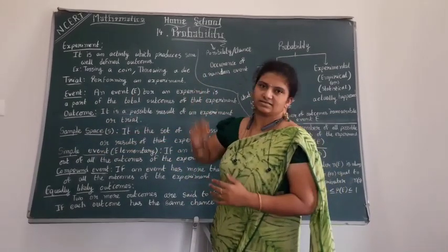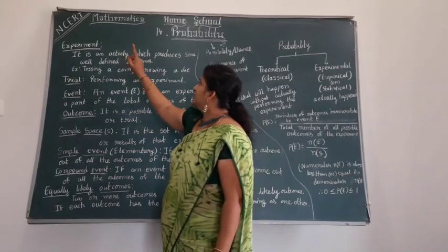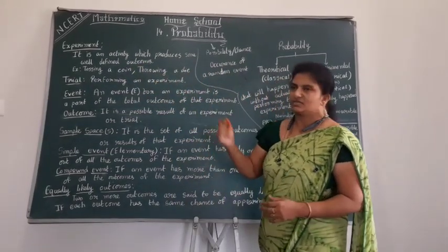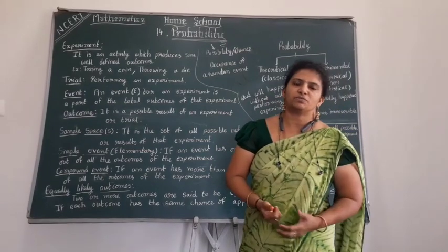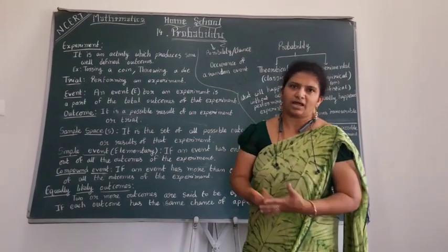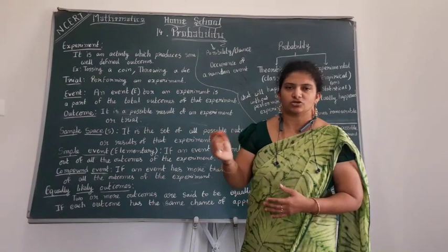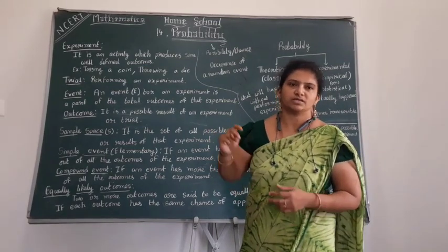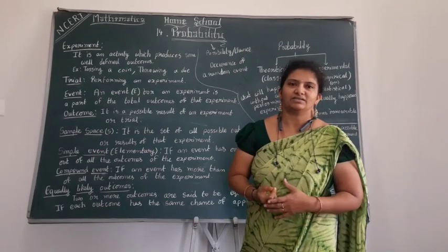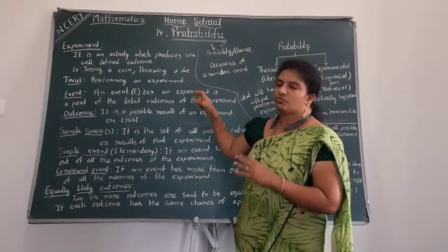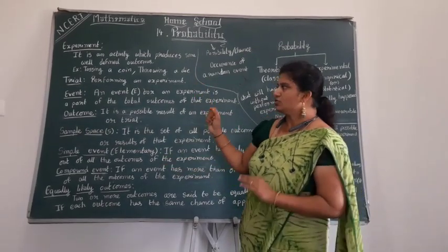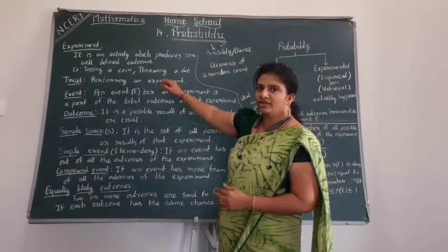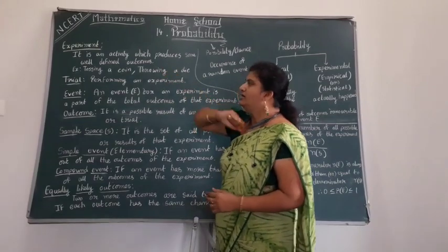An experiment is an activity which produces some well-defined outcomes. The random experiments we do in probability include tossing a coin, throwing a die, tossing two coins, tossing two dice, and playing cards. A trial means performing the experiment.